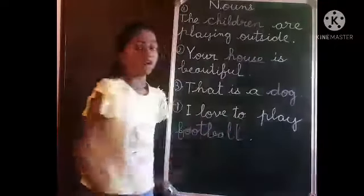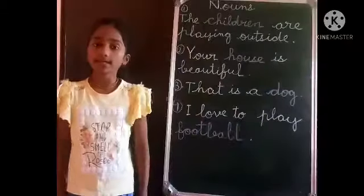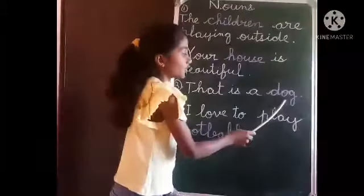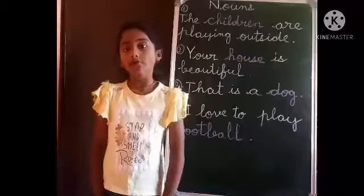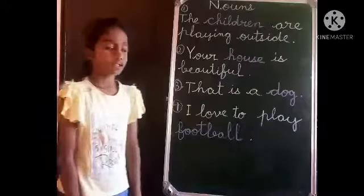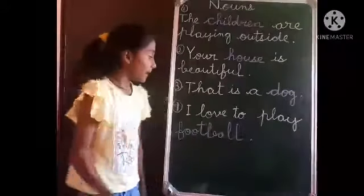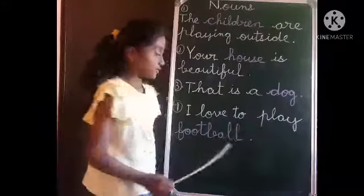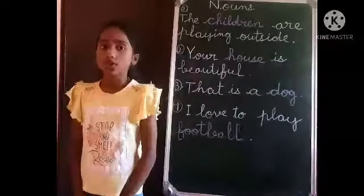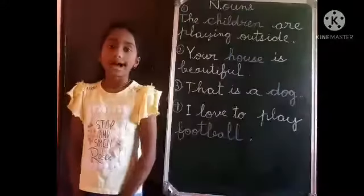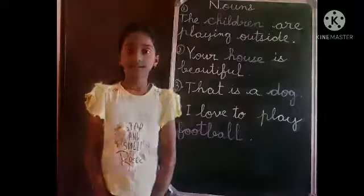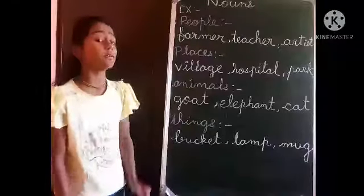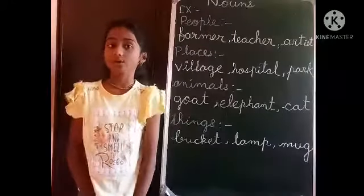Next example: 'That is a dog.' Here, dog is the noun used for names of animals. Next example: 'I love to play football.' Here, football is a noun that is used for name of things. Friends, let's learn some more examples of nouns.